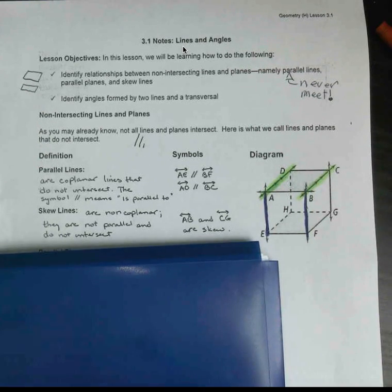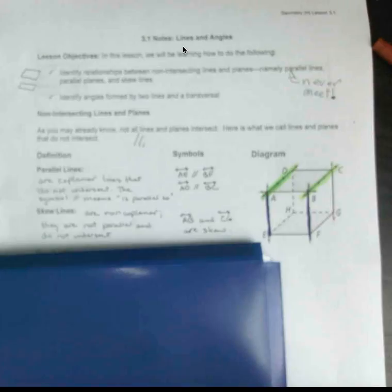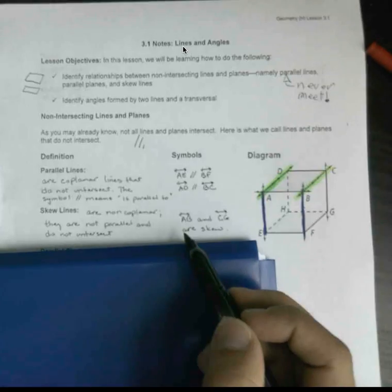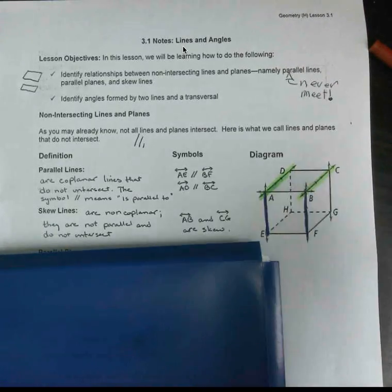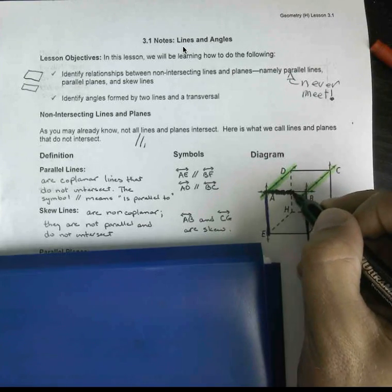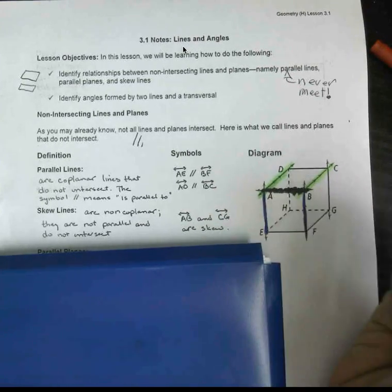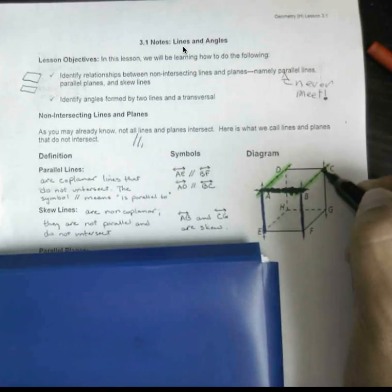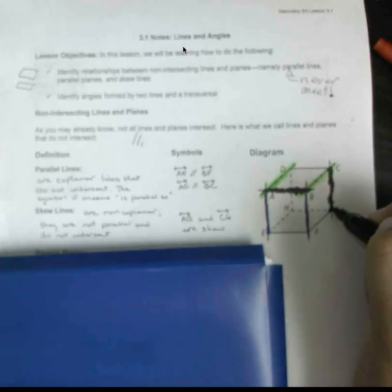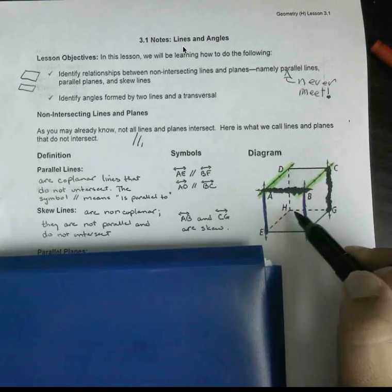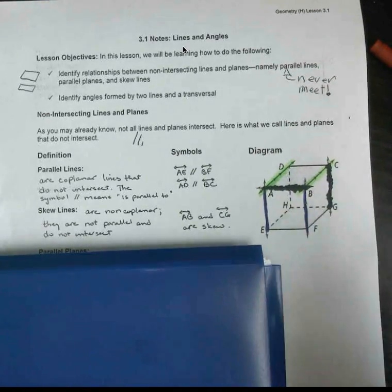With skew lines, these are slightly different. These are non-coplanar, meaning these are not on the same plane. They're not parallel and they don't intersect. It's kind of as if they have nothing to really do with each other. So AB and CG are skew. AB's through here, C to G's way out here, so these are definitely not on the same plane. They're in different locations of the box.